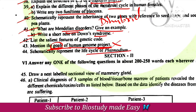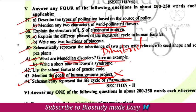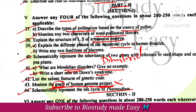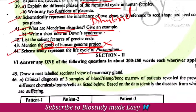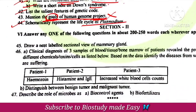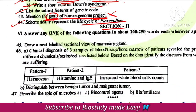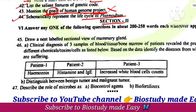Life cycle of Plasmodium — again, an important question. Answer any four points. Easy in this section. Draw a diagram of the mammary gland — again a direct easy question.